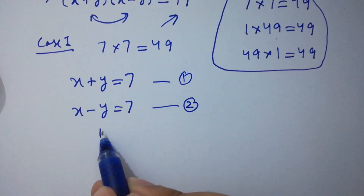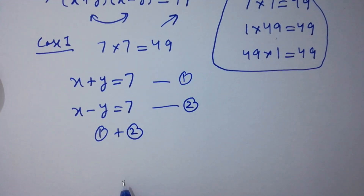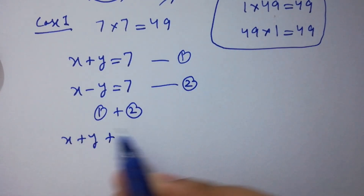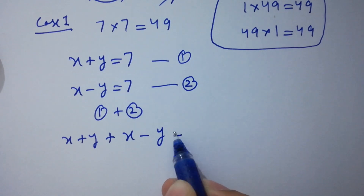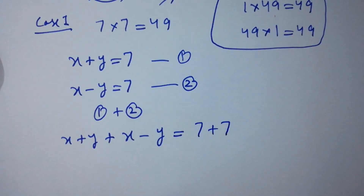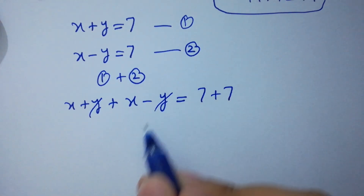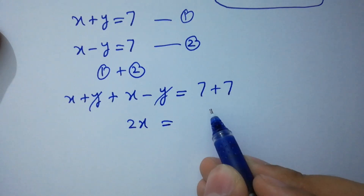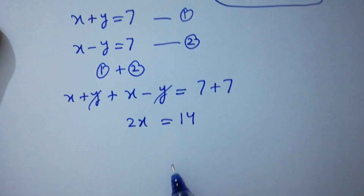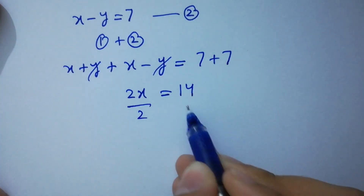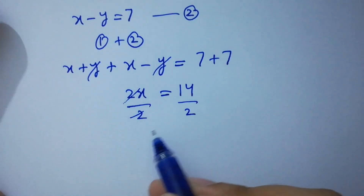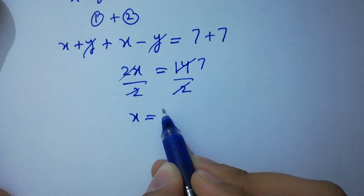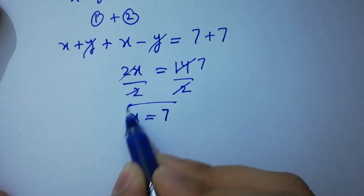Adding the two equations: x plus y plus x minus y equals 7 plus 7. The y terms cancel, giving 2x equal to 14. Dividing both sides by 2, we get x equal to 7.